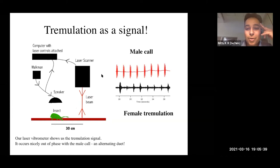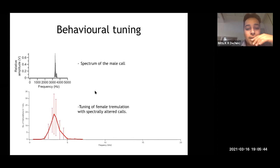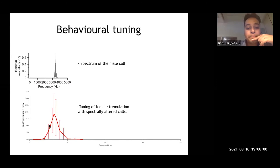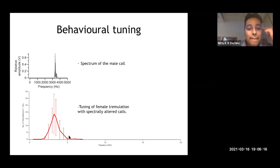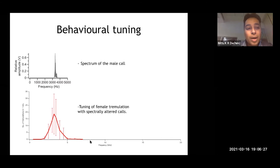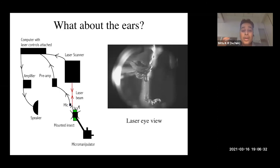With the tremulation approach, we didn't need to set up a trackball system to quantify interest in a call. We just have this beautiful tuning curve showing female tremulation with respect to spectrally altered calls. You find a beautiful bandpass response — she shows maximum interest at the same peak frequency as the male, and lowered but still existing interest up to about 2 kHz and 4 kHz, but at roughly 1 kHz outside the male's peak, the bandwidth of this tuning drops off sharply.